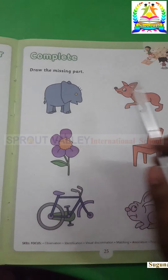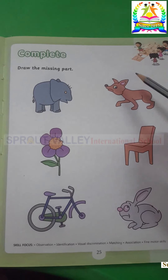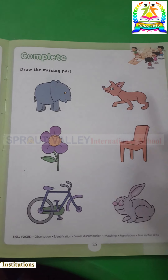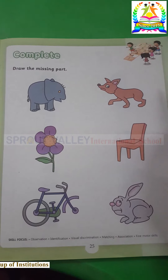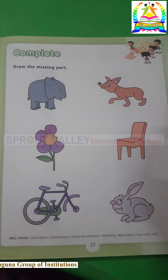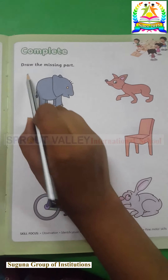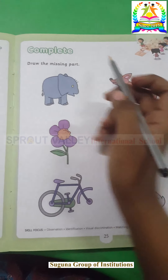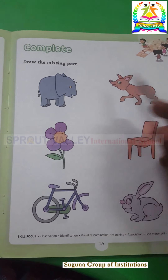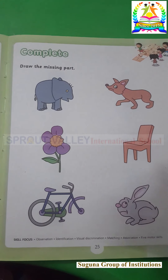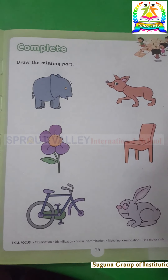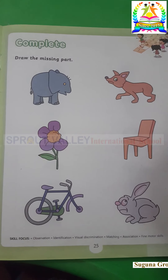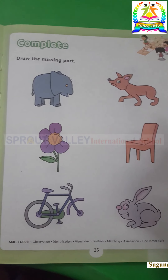See here. What is this? A new topic we are going to start today. This is 'Complete - Draw the missing part.' Here some pictures are given and they are missing their parts. We have to complete them.